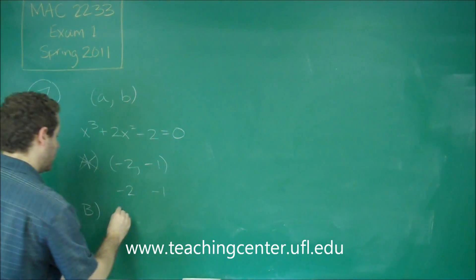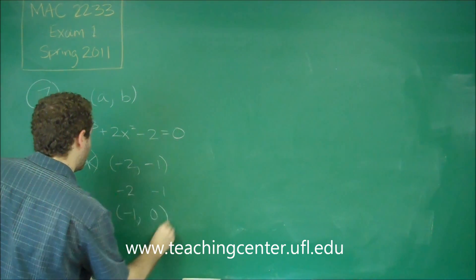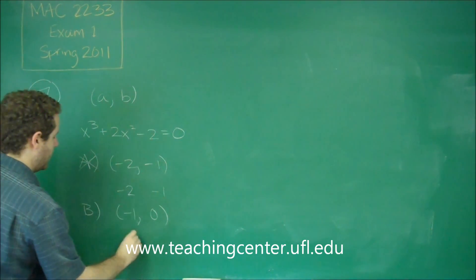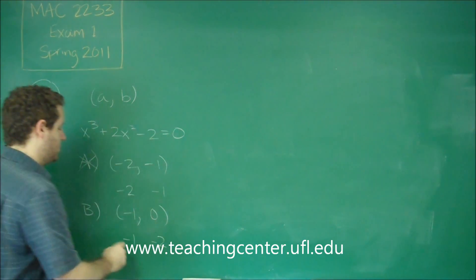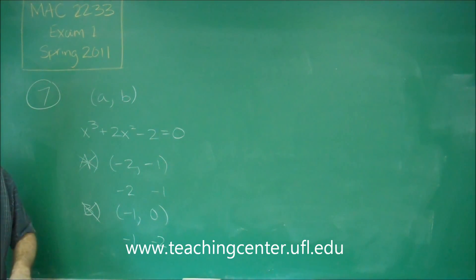Answer choice B, we have the interval negative one to zero. We just tried negative one and we got negative one, so we can do that. If we plug in zero, we get zero, zero, negative two. Again, two negative answers, that doesn't give us a zero.